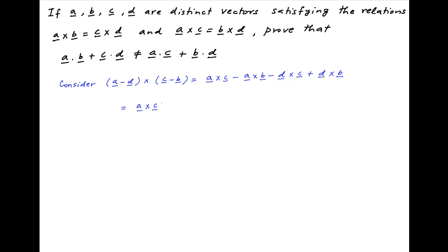This can be written as a cross c minus a cross b plus c cross d, because d cross c is equal to minus c cross d, minus b cross d, because d cross b is equal to minus b cross d.